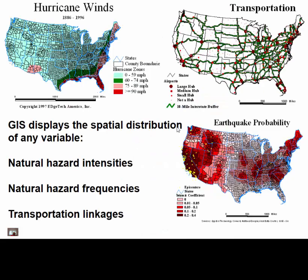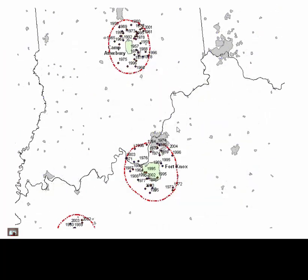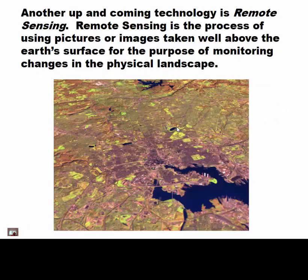We have GIS — geographic information systems — which is my specialty. It can display spatial variation, natural hazards, intensities, and more. This is some work I've done with the Army mapping tornadoes around particular Army bases. We also have remote sensing — collecting data from a distance. This satellite image shows Fort McHenry and Inner Harbor, Baltimore, taken about 20 years ago. You can see the Ravens Stadium being built, and Camden Yards right there.